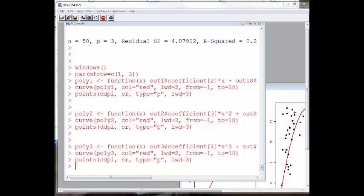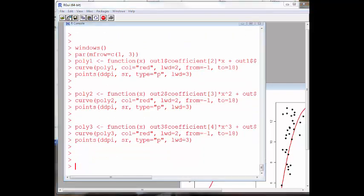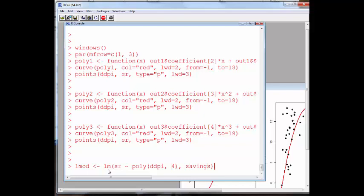So here's how you can implement that. And it's the poly command, poly command. I'm going to build a linear model. Again, I'm going to regress SR versus, but this time I'm going to use, regress it onto poly of that variable that I'm interested in. And it's going to be a, I'm going to make a fourth degree polynomial model. And I'm using the savings data. And I'll take a look at the summary of L mod.